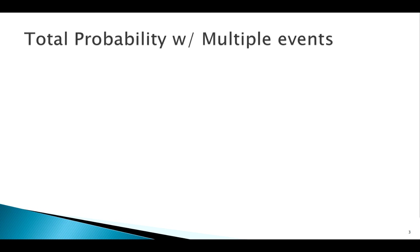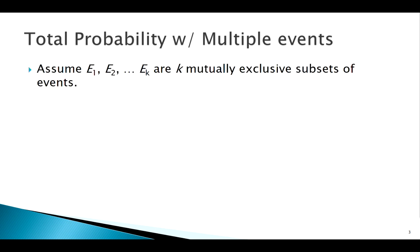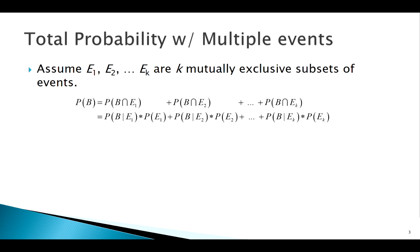You can also extend the Law of Total Probability to more than just two events. Say we have events E1 through Ek, where each of these events are mutually exclusive. If we're still interested in the probability of event B, we can write P(B) as the sum: P(B and E1) + P(B and E2) + P(B and E3) + ... + P(B and Ek). Applying the multiplication rule to each piece gives us the Law of Total Probability extended to multiple events.